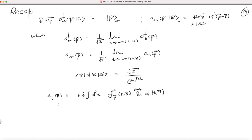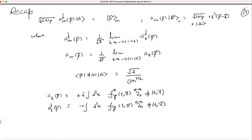And a_t†(p) is given by the corresponding expression involving f_p(t,x) acting in the opposite direction.